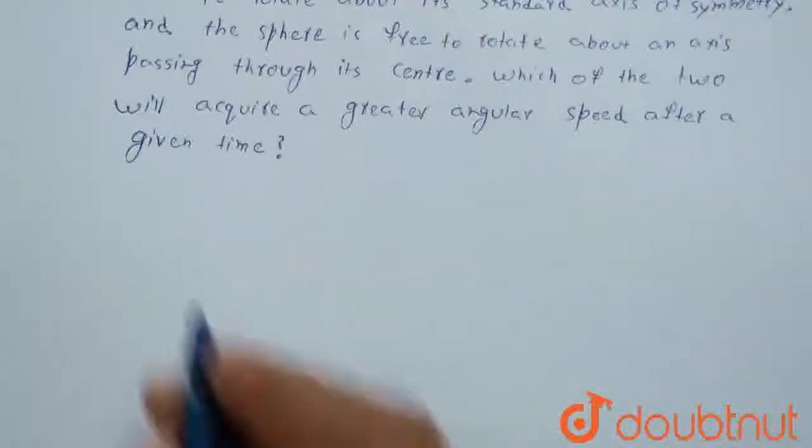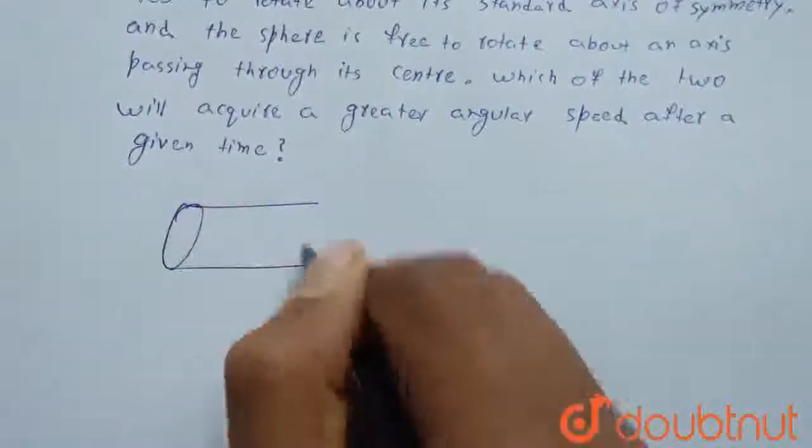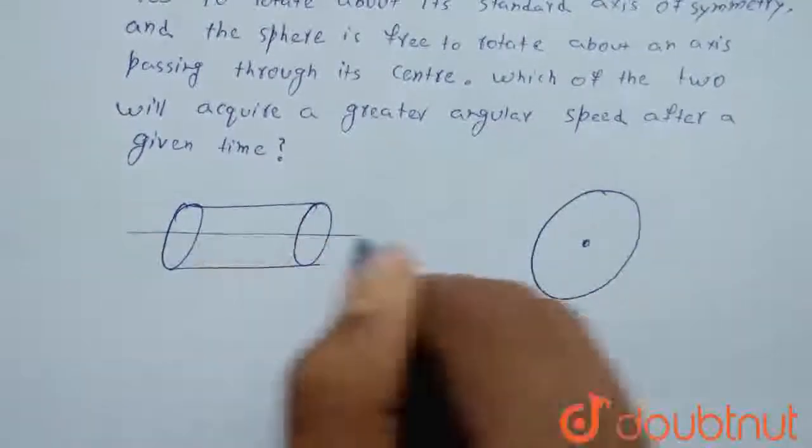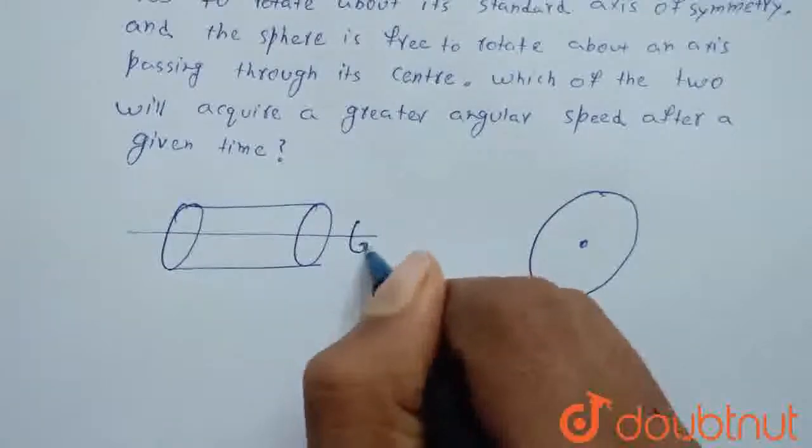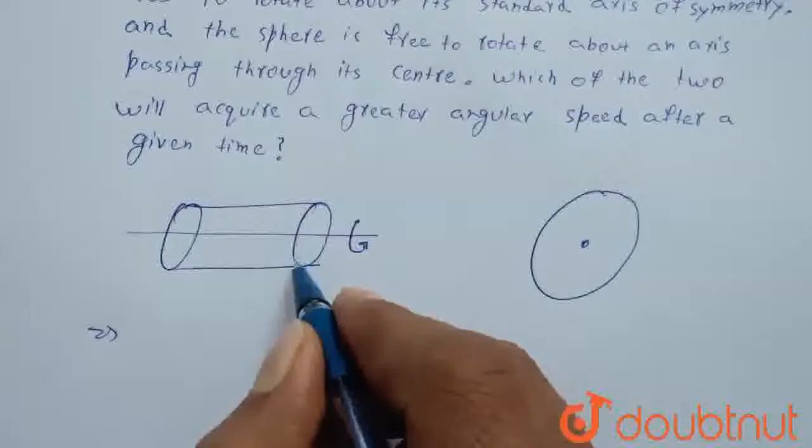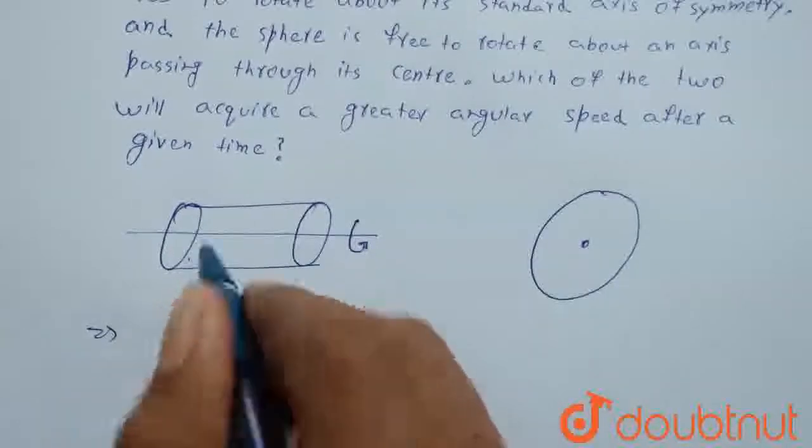Basically, we have a cylinder and a solid sphere, and both are free to move about their given axes. If we apply the same torque, then what will happen?